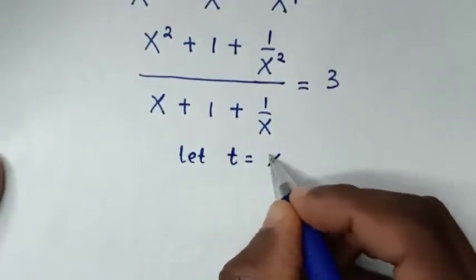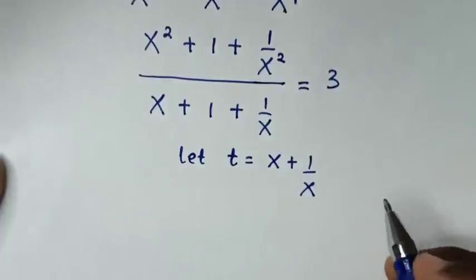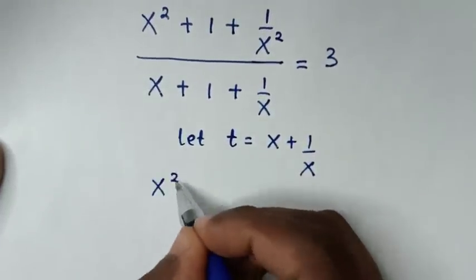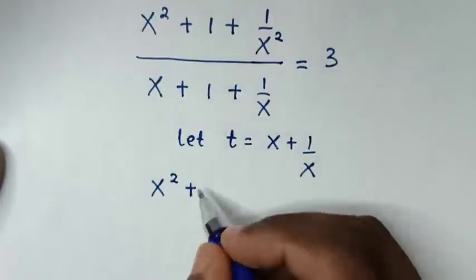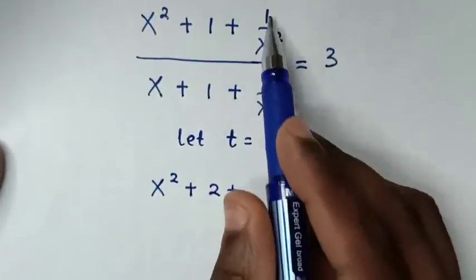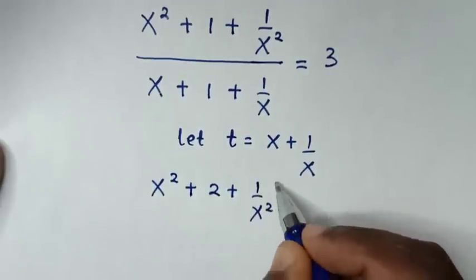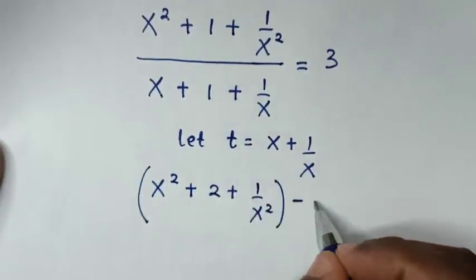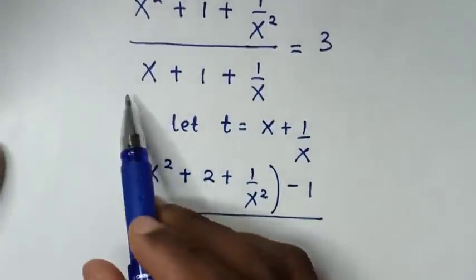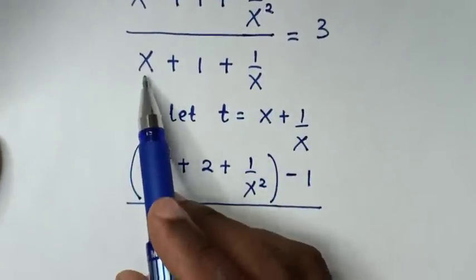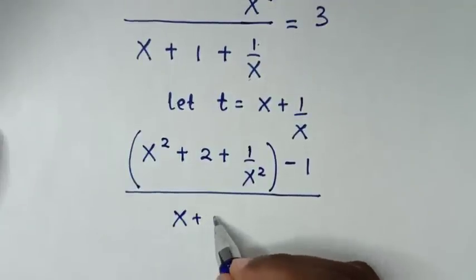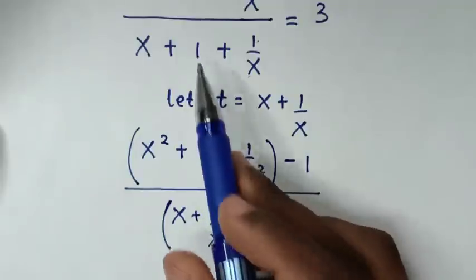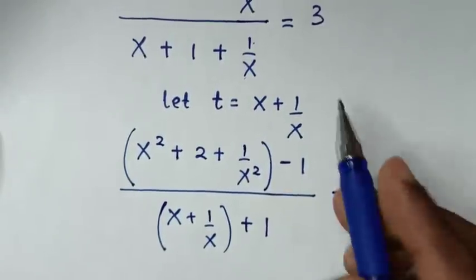Then from the numerator and denominator we let t equal to x plus 1/x, because it is common. In the denominator, x plus 1/x² — we add 1 to get x² plus 2 plus 1/x², then minus 1. In the denominator it will be x plus 1/x, close bracket, plus 1, equal to 3.